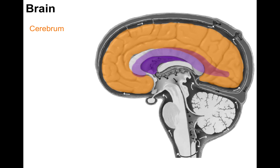Now for brain anatomy — a brief overview. In a mid-sagittal section, the cerebrum is shown in orange, with right and left hemispheres. Within each cerebrum is a hollow chamber called the lateral ventricle, filled with CSF and coursing from front to back. There is a right and left lateral ventricle — two of them, hence the name.